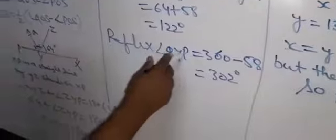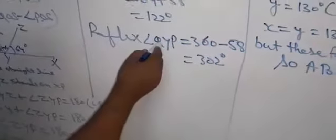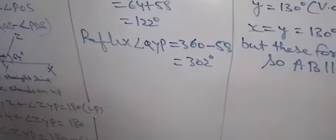Reflex angle QYP is equal to 360 minus 58, which gives 302 degrees. Because angle QYP is 58 degrees, to find the reflex of any angle we subtract it from 360. With this, exercise 6.1 is complete and we will now move to 6.2.